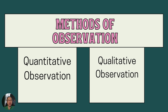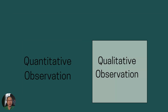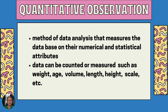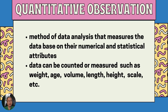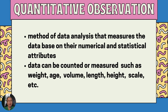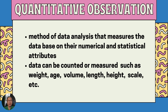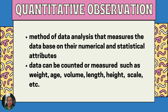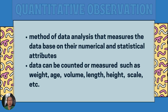There are two methods of observation: quantitative observation and qualitative observation. Quantitative observation is a method of data analysis that measures data using numerical and statistical attributes. Data can be counted or measured, such as weight, age, volume, length, height, scale, width, and many more.